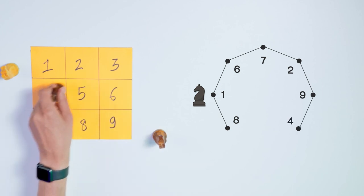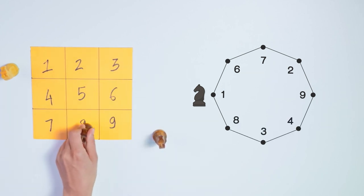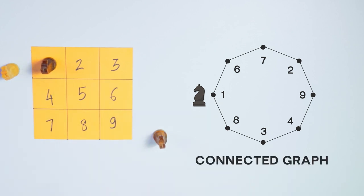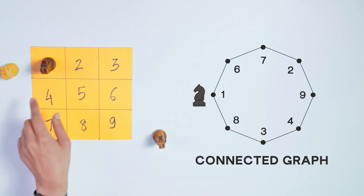And what we get is called a connected graph. By the way, we can't go to 5 from anywhere on this grid. So 5 won't be connected to any point. Let's keep it at the center.